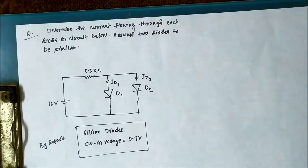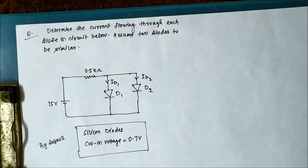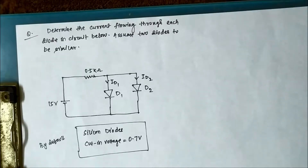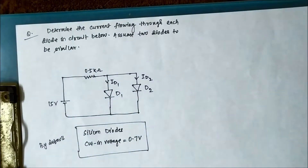The next thing we have to take care of is that by looking at the circuit we cannot immediately say whether the diode is on or off. We have to go with assumptions — we can either assume that the two diodes are off, or we can assume that the two diodes are on. By looking at the circuit, we can make a rough guess that the two diodes will be on.